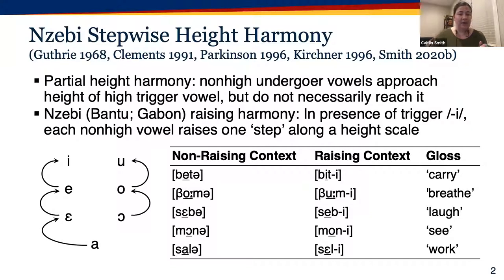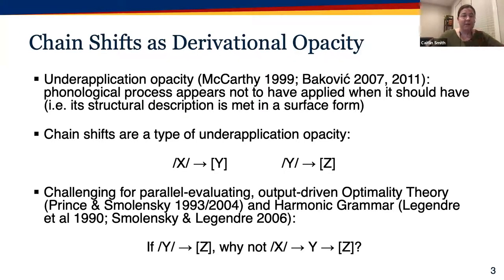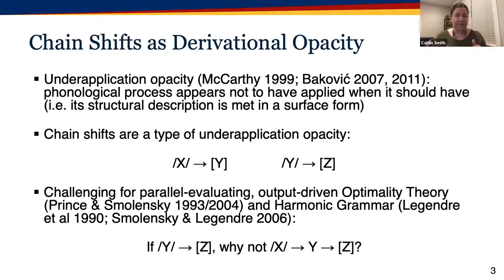This pattern is a synchronic chain shift, and chain shifts represent a type of under-application opacity. Under-application refers to a situation in which a phonological process appears not to have applied when it should have — when its structural description is met in a surface form. If we have a process that maps underlying x to y and another that maps underlying y to z, then the y-to-z process has under-applied to the y derived from x. This is challenging for constraint-based frameworks like optimality theory and harmonic grammar, which have no explanation for why underlying y maps to z but derived y does not.